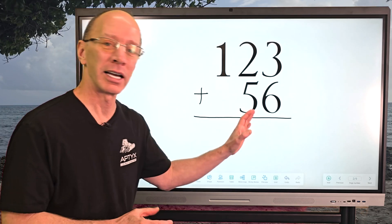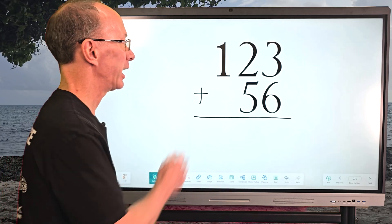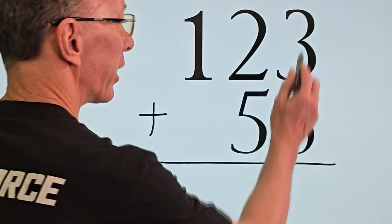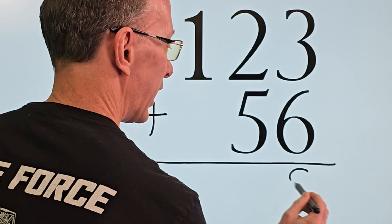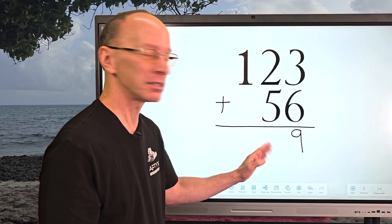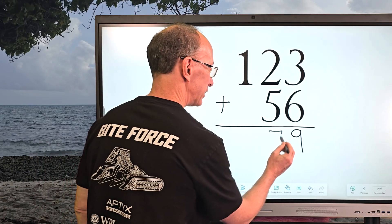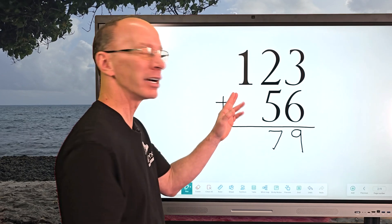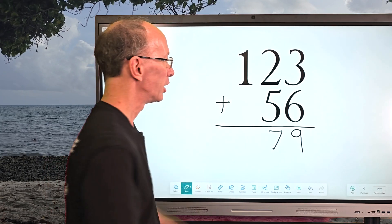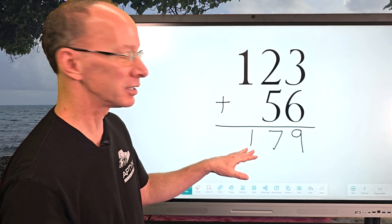When we do a problem like that, we always add the ones first. So I got three plus six equals nine. And now I'm going to add the tens. So five plus two equals seven. And now I'm going to add the hundreds, which would be one. So that's our answer, 179.